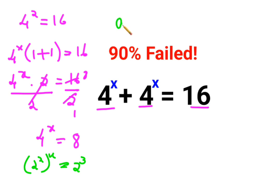We know that in indices, (a^m)^n can be written as a^(m×n). So this can be written as 2^(2x) = 2^3.